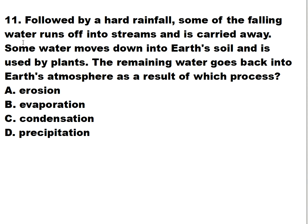Question eleven: following a heavy rain, some of the falling water runs off into streams and is carried away. Some water moves down through the soil and is absorbed by plants, and the remaining water goes back into the atmosphere. What is this process called? A: erosion, B: evaporation, C: condensation, or D: precipitation. The answer is letter B — evaporation.